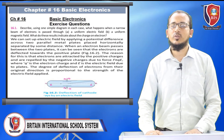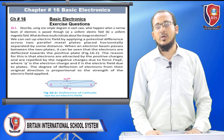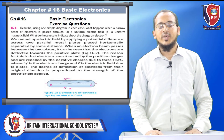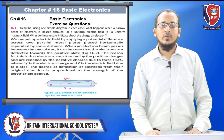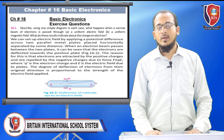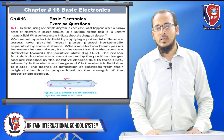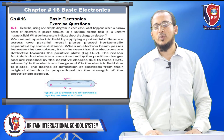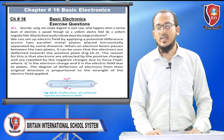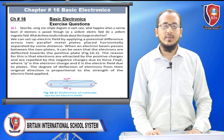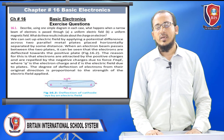A narrow beam of electrons is passed through a uniform electric field and a uniform magnetic field. What do these results indicate about the charge on the electron? We can set up an electric field by applying a potential difference across two parallel metal plates placed horizontally. When an electron beam passes between the plates, the electrons are deflected towards the positive plate. This is because electrons are attracted by positive charges and repelled by negative charges, due to force F = QE, where Q is the electron charge and E is the electric field. The degree of deflection is proportional to the strength of the electric field applied.